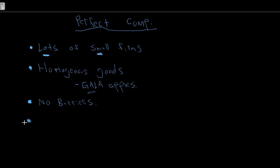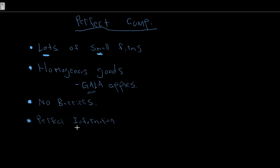Our final determinant — perfect information — holds through all of our market structures. Consumers know everything there is to know about the good, and firms all have access to the same technology, same production process, and therefore the exact same cost profile. All information that's available is perfectly, readily, and completely available.